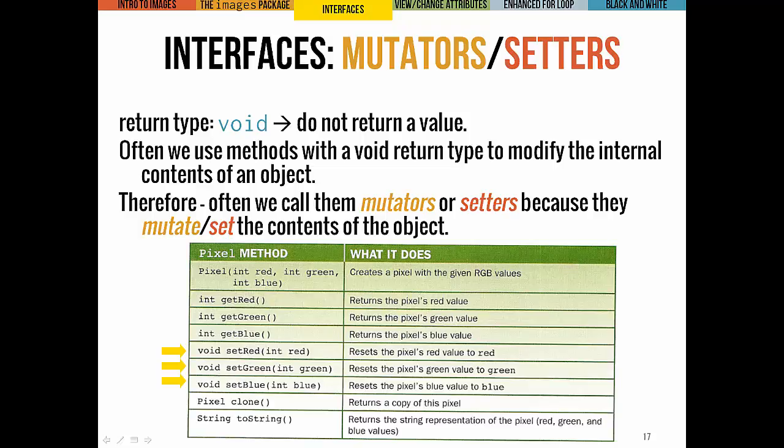Looking at the interface for the Pixel class, some methods have a void return type — basically all the methods we've written so far have had void return types, which means it doesn't return a value. We're often going to use void methods to actually modify the internal contents of an object. For that reason, we often call them mutators or setters. For example, setRed, setGreen, and setBlue — those methods take one input: a new integer value, and they change that pixel's red, green, or blue value to whatever input we pass in. That's how we change the color of a particular pixel.